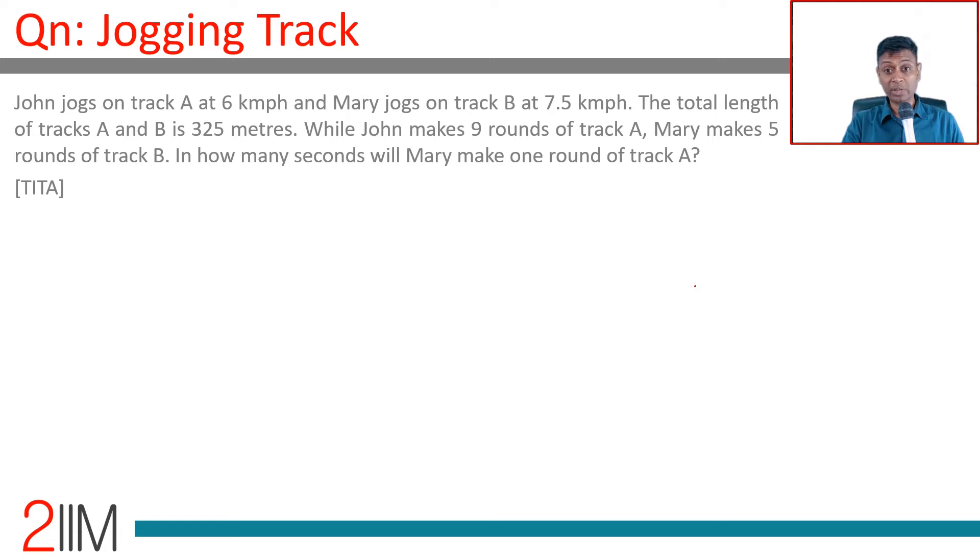John jogs on track A at 6 km per hour while Mary jogs on track B at 7.5 km per hour. The total length of tracks A and B is 325 meters. While John makes nine rounds of track A, Mary makes five rounds of track B.